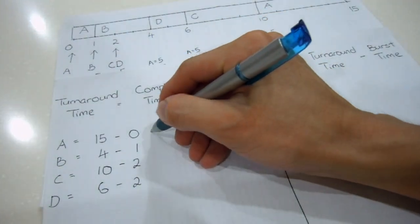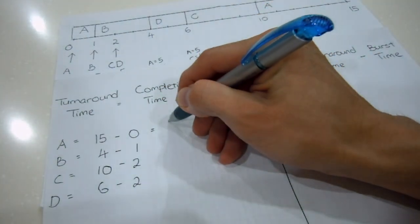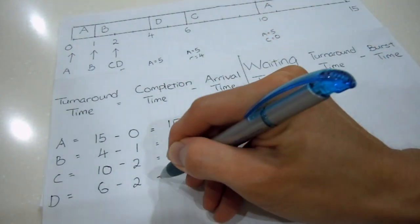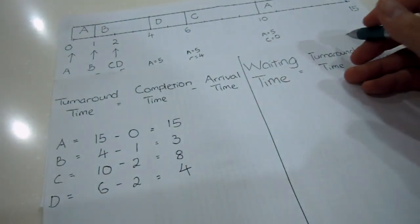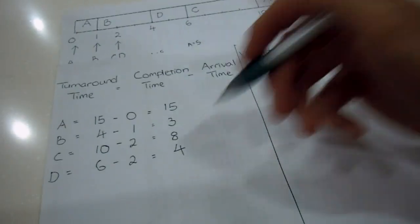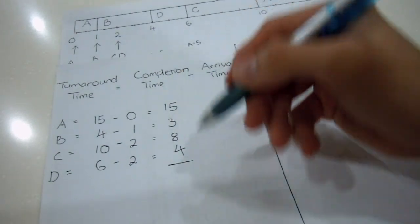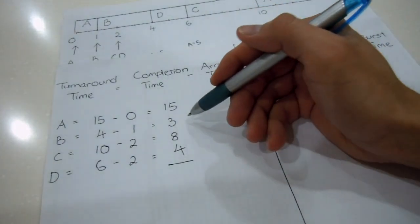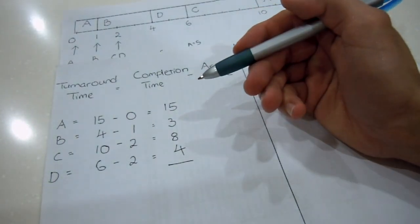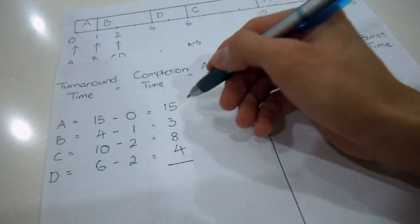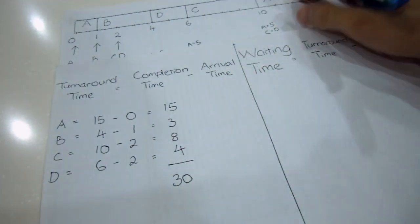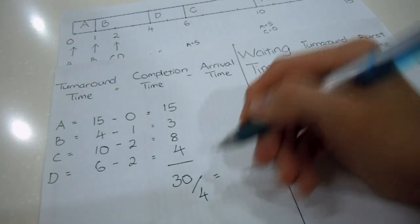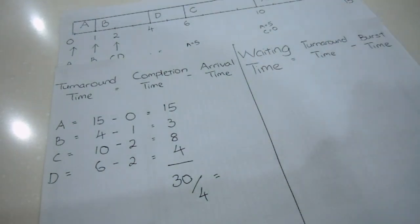So 15 minus 0, I got 15. I got 3, I got 8, and I have 4 here. To get the average, it's very simple. I just sum these up and get the average of the 4 processes. For this case, it's going to be 15 plus 15, which is 30, and I divide by 4. So I got my average turnaround time.